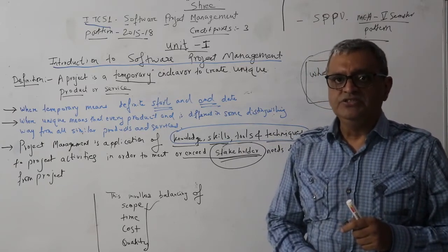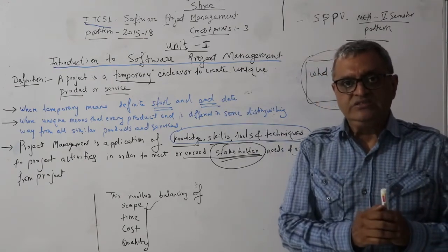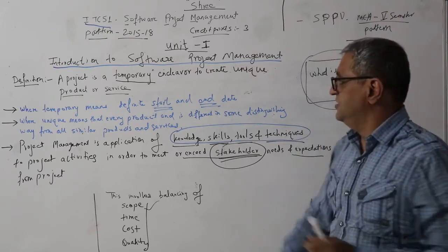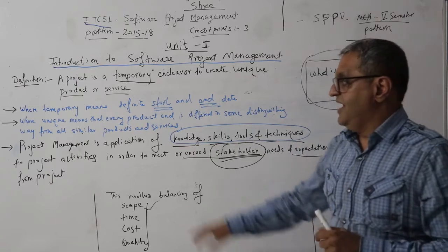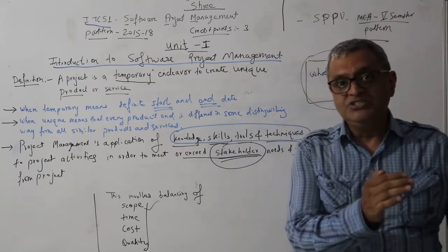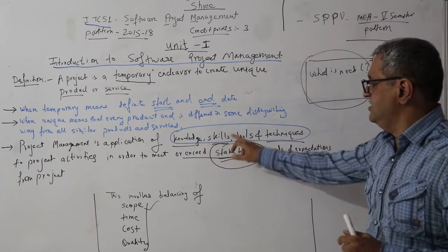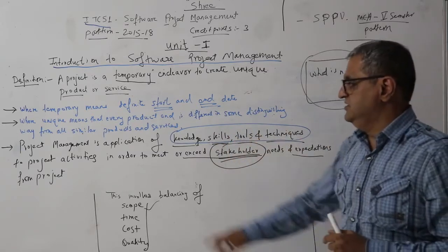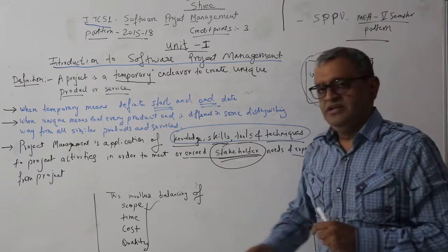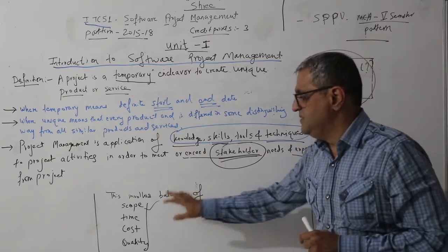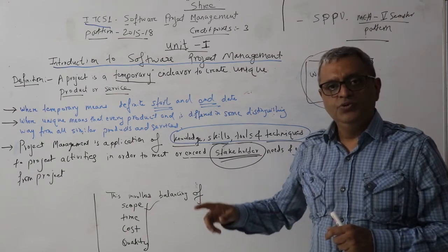As a project manager, these four things become increasingly important and balancing them is one of the most important activities. To summarize: a project is a temporary endeavor to create a unique product or service. Project management is the application of knowledge, skills, tools, and techniques to project activities in order to meet or exceed stakeholder needs and expectations, and this requires a huge balancing of scope, time, cost, and quality.